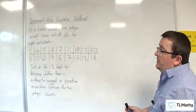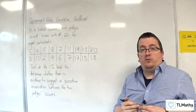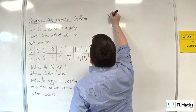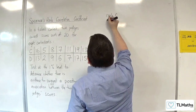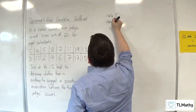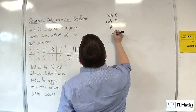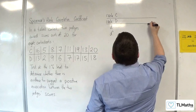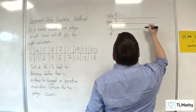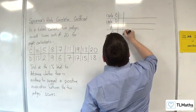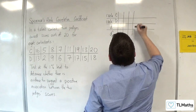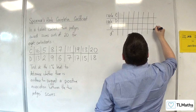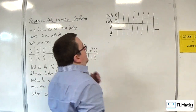The first thing we need to do is work out Spearman's rank correlation coefficient for this data. So we're going to need to rank the scores of C and D, work out the difference and the difference squared. We have contestants 1, 2, 3, 4, 5, 6, 7, and 8.